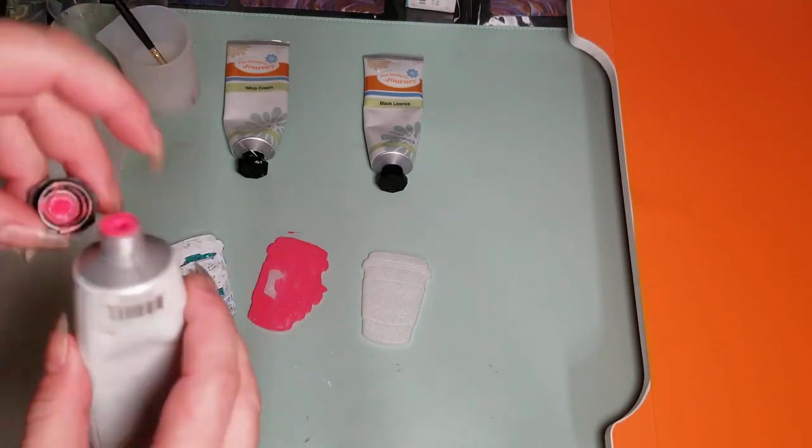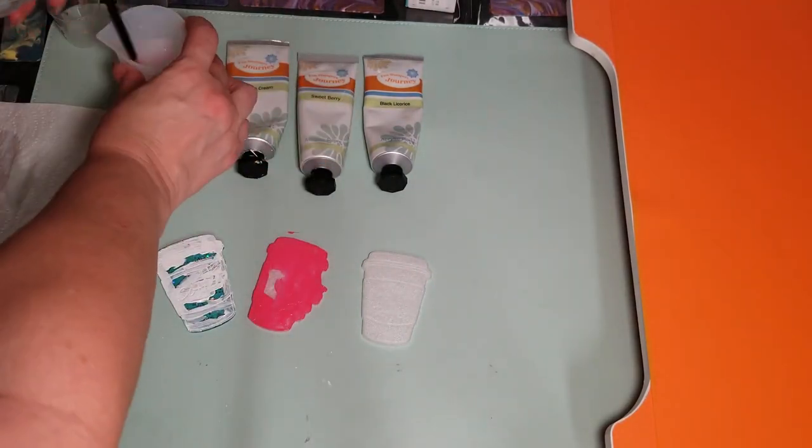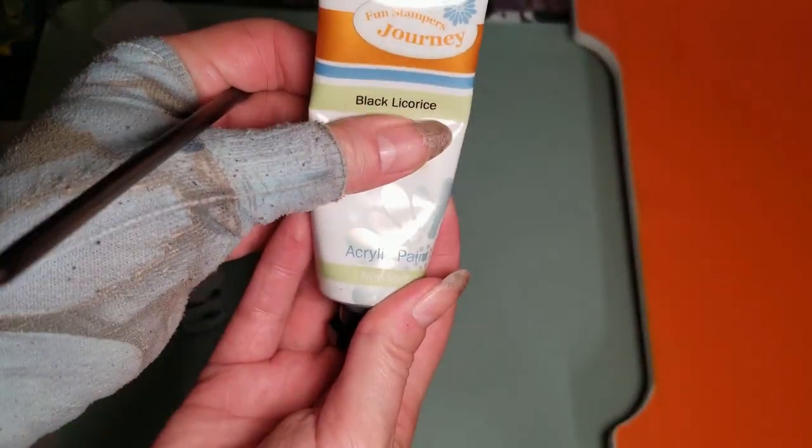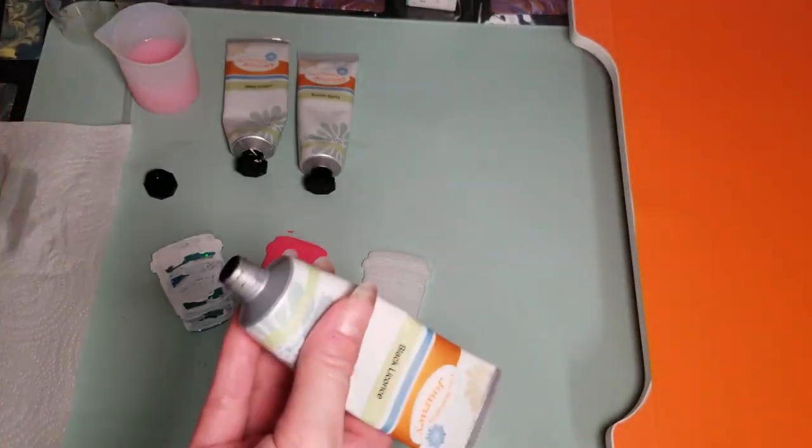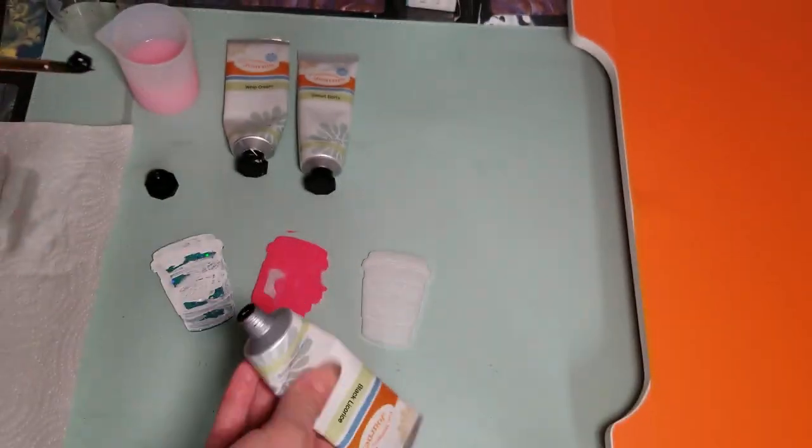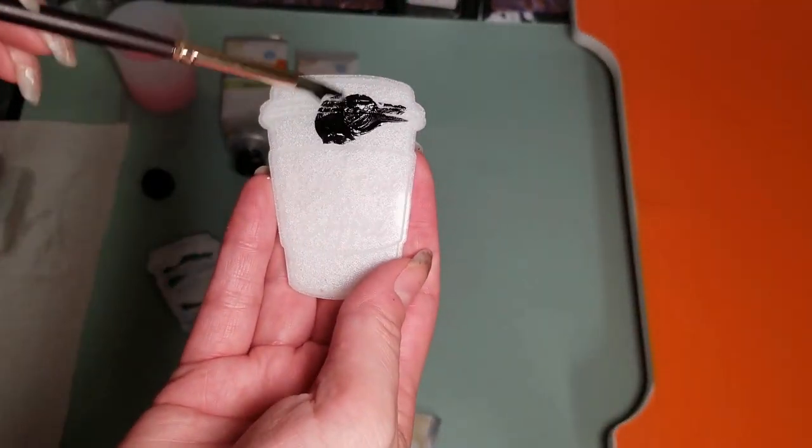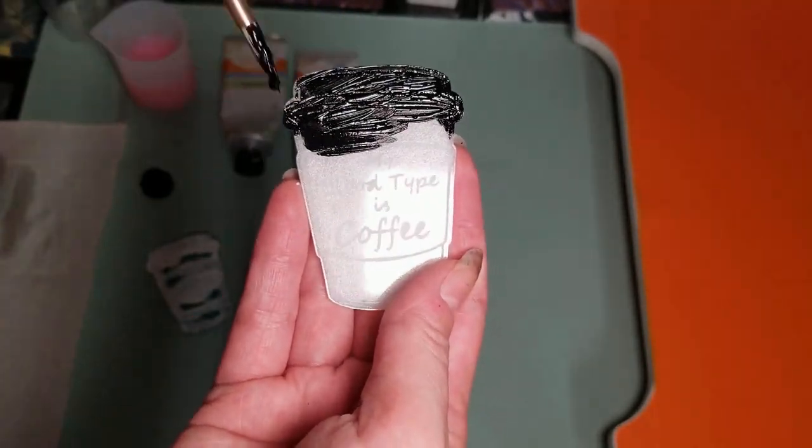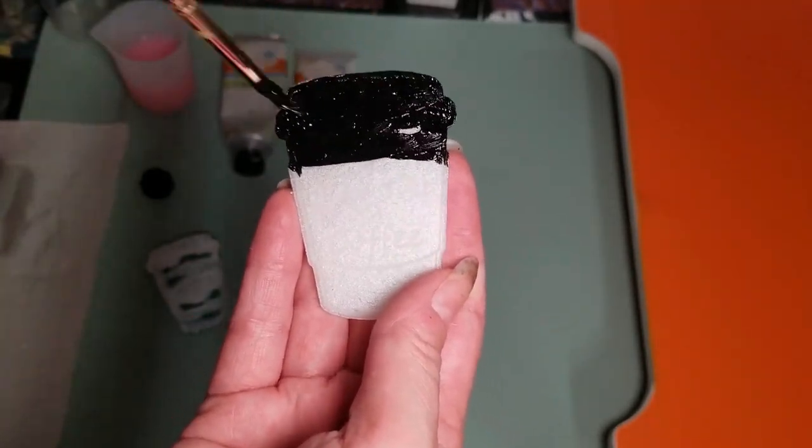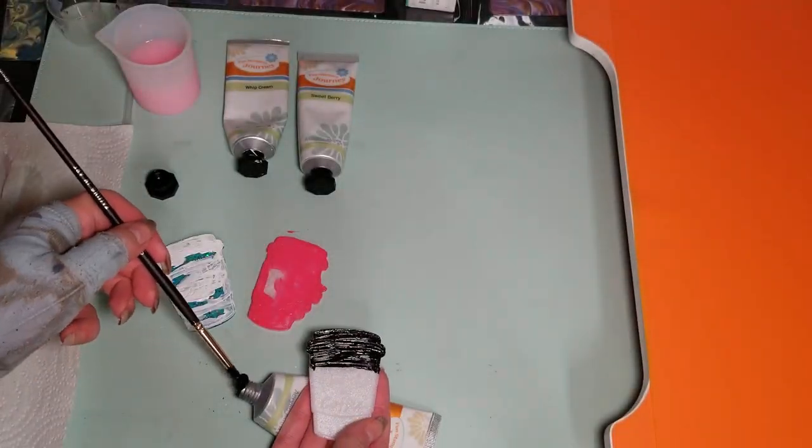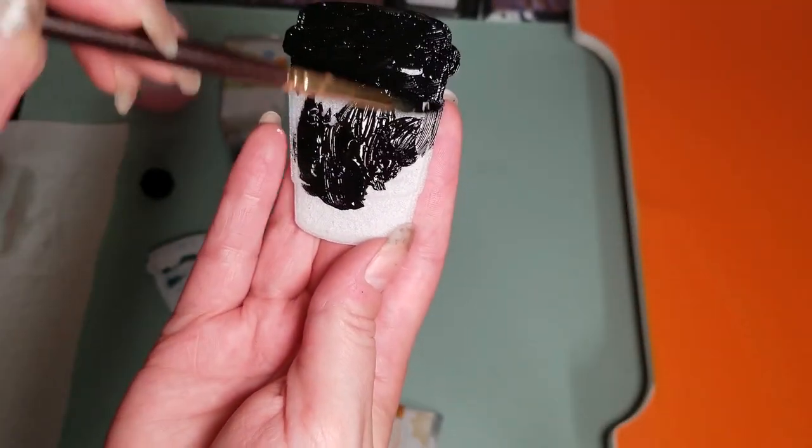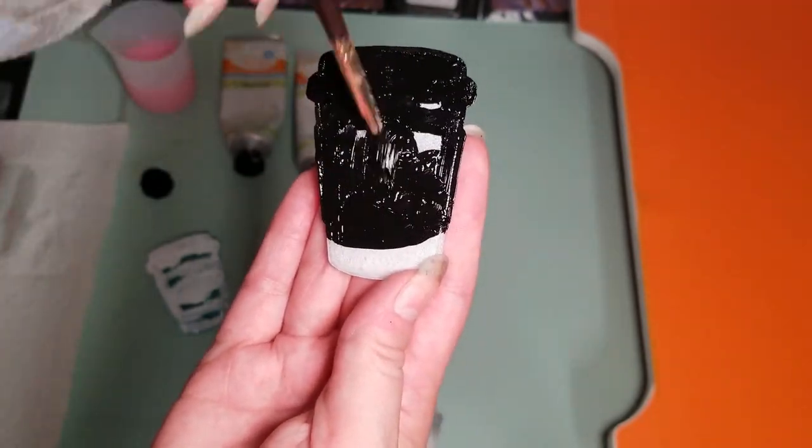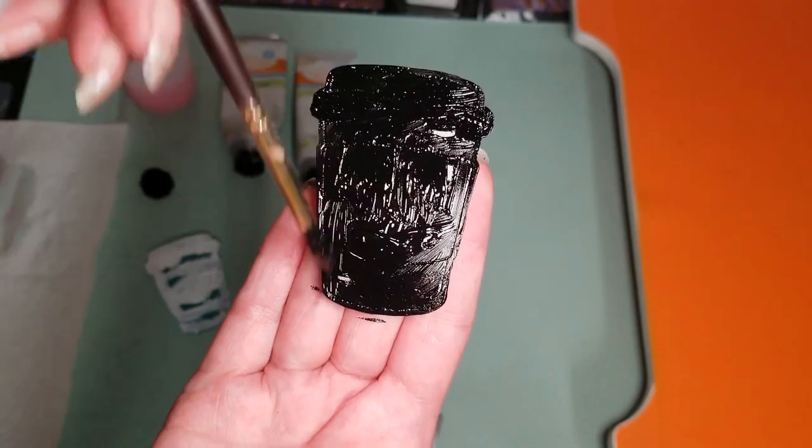Now black licorice is the next color because that black is really going to pop on this next coffee cup. Now here you'll see much, much faster. And I'm much less careful with the coloring. And I just paint over the entire surface. And there's nothing wrong with that.